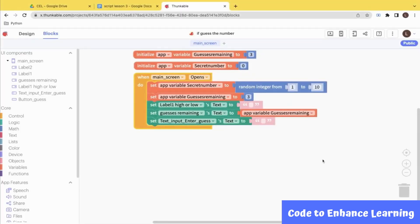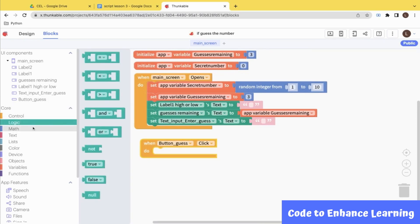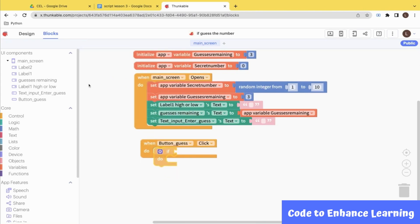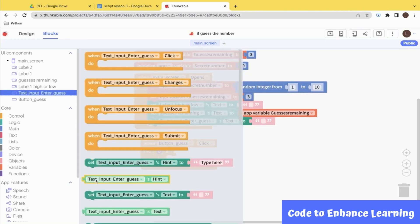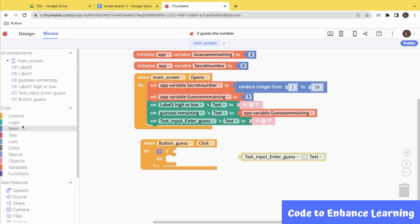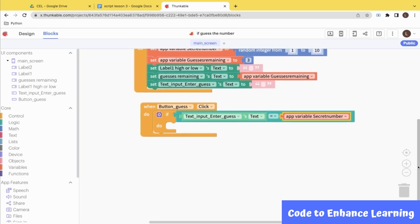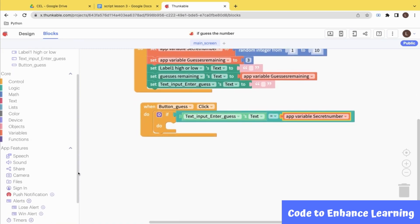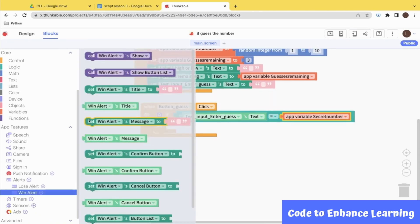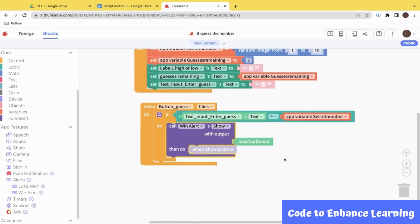We know that when the entered value matches the random number, we have to congratulate the player, right? So, when the guess button is clicked, we check if the guess entered is the same as the secret number. If this condition evaluates to true, we call the Win Alert which then alerts the user that he or she has won the game.